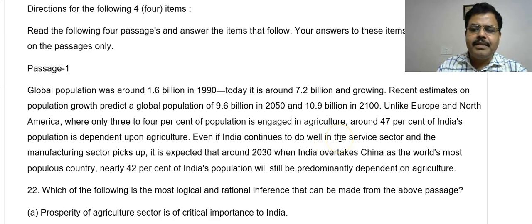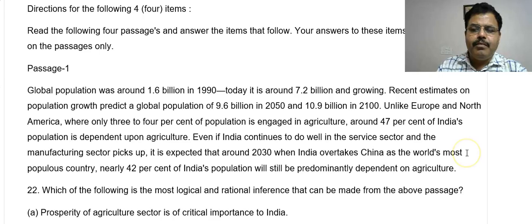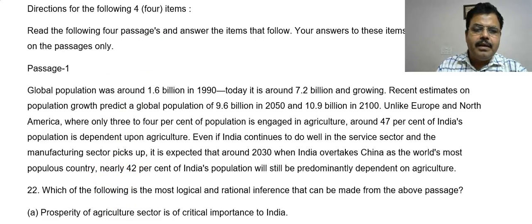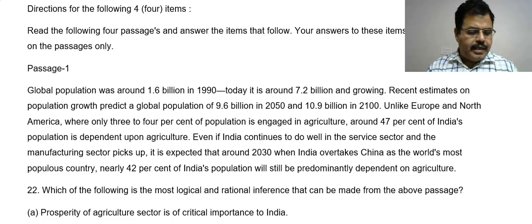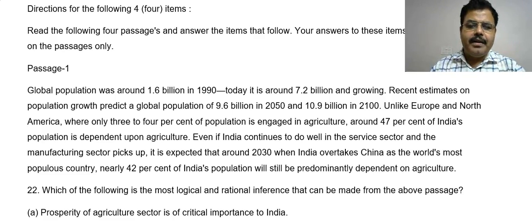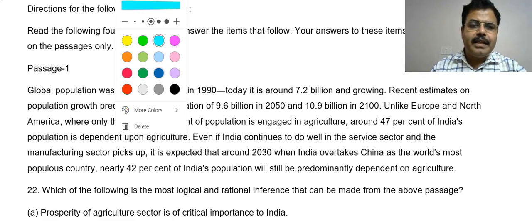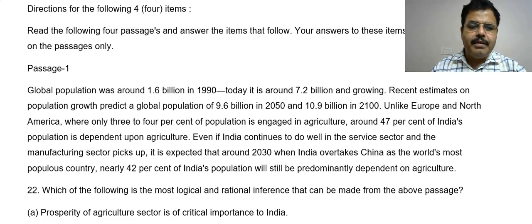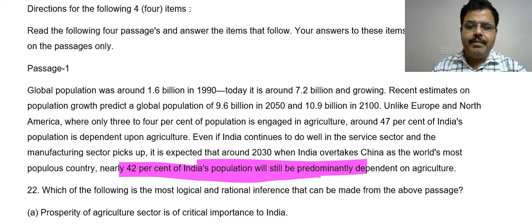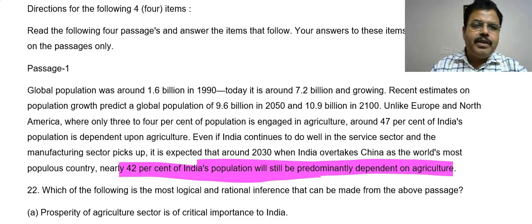Even if India continues to do well in the service sector and manufacturing picks up, it is expected that around 2030, when India will overtake China as the world's most populous country, nearly 42 percent of the population will still be predominantly dependent on agriculture. This is the key conclusion of the passage.